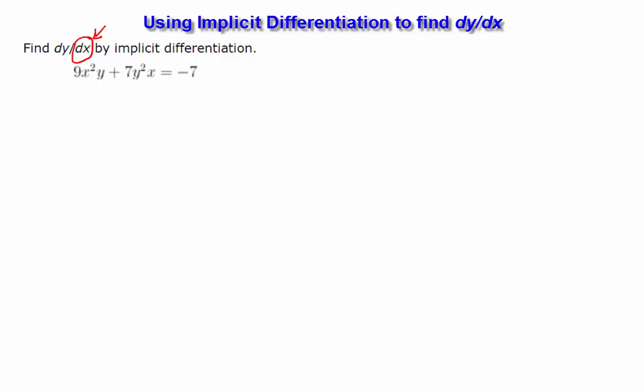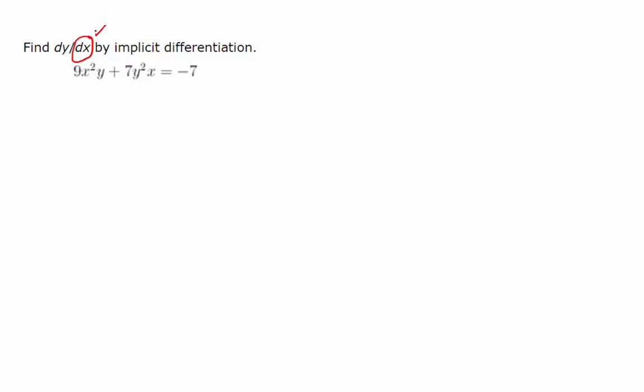Using implicit differentiation to find dy dx. First of all, when you're asked to use implicit differentiation, it's really important to look at what you're differentiating with respect to which variable. That's what tells you what to take the derivative with respect to on each side. So we're taking the derivative with respect to x on each side. That becomes important when you're using multiple variables.